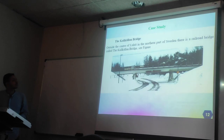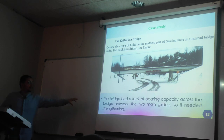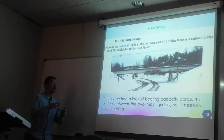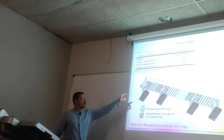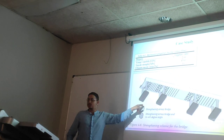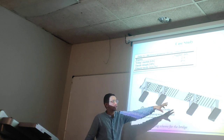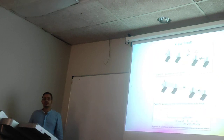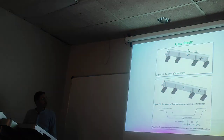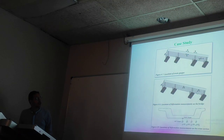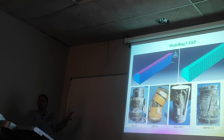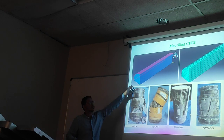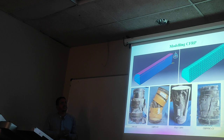Here is a case study where a bridge had a lack of bearing capacity between the two main girders and needed strengthening. They used CFRP in two forms: either across the bridge or at 45 degrees. Then they measured the deflection using strain gauges placed at specific positions shown here to see how successful the application was.